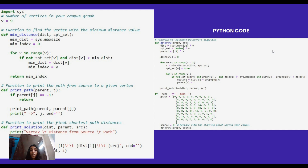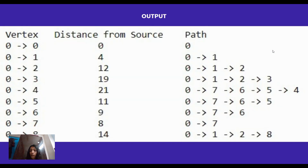Finally it calls printSolution to print the shortest path. We check if the script is being run as the main program, define the adjacency matrix as graph representing the graph with edge weights, specify the source vertex, and call the dijkstra function to perform Dijkstra's algorithm on the graph. In the output, the vertex column represents the destination vertex, distance from source indicates the shortest distance from the source vertex to the destination vertex, and path is the sequence of vertices. Vertex 0 represents the source vertex itself with a distance of 0.